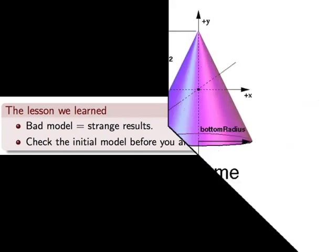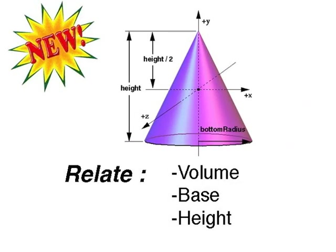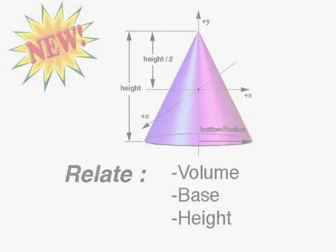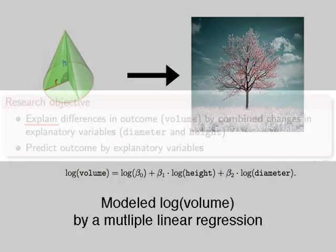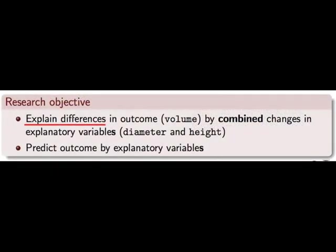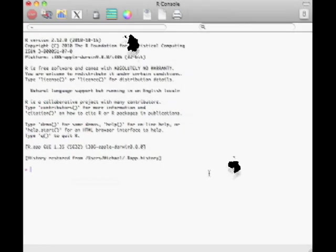In the context of our problem, the model was not right. We needed a new way to relate volume, base, and height. The tree trunk was cone-shaped in its expression, and we modeled its log volume by a linear regression. Our research objective was to try to explain the differences in volume by the combined change in the explanatory variables with which we begun, and to use them to predict some sort of outcome.